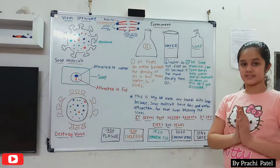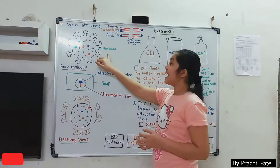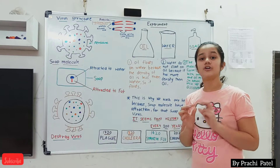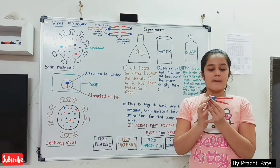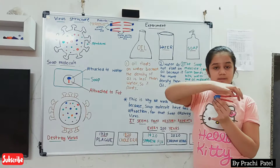So now let's look at the structure of the coronavirus. The structure is made of a membrane, and the membrane is made of a number of molecules. Molecules have two types of properties — one property attracts to water and the other property attracts to fat.